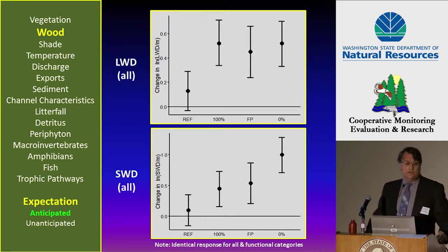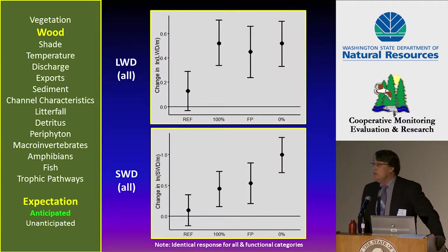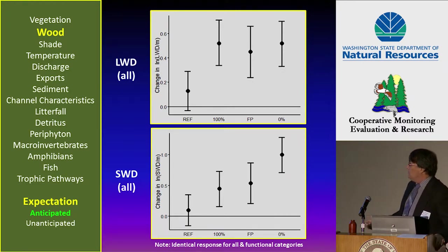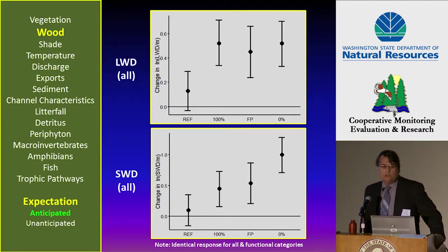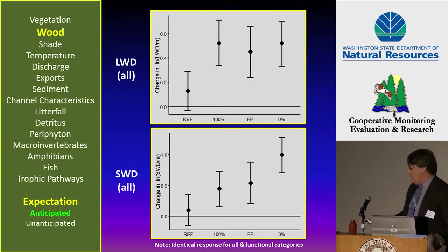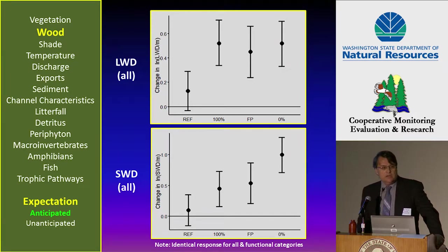The second wood variable is small and large wood in context of LWD — large woody debris — and small woody debris. The top panel is large woody debris. In the case of large woody debris we saw no difference between the treatments relative to the reference. In the case of small woody debris we saw an increase across the treatment gradient. This pattern was basically the same whether we considered wood in the large and small categories as functional or not, functional being defined as wood that had some function within the stream system.